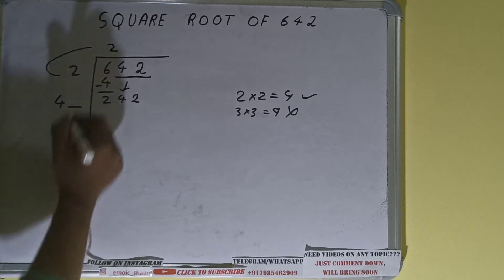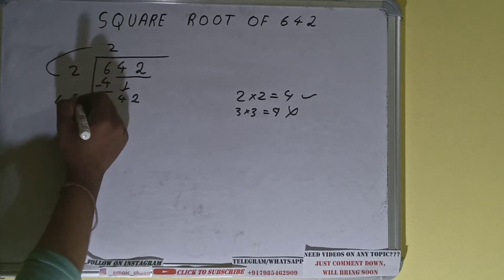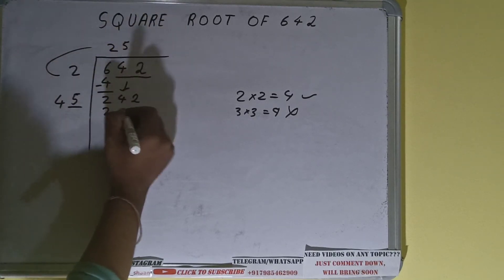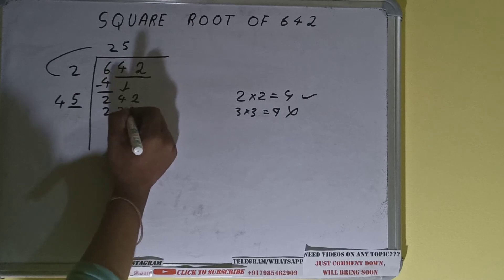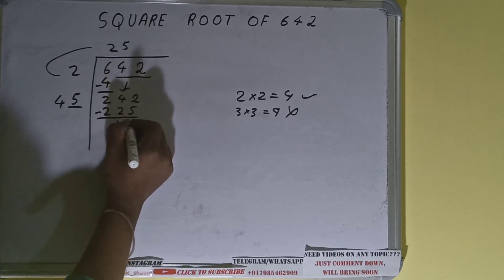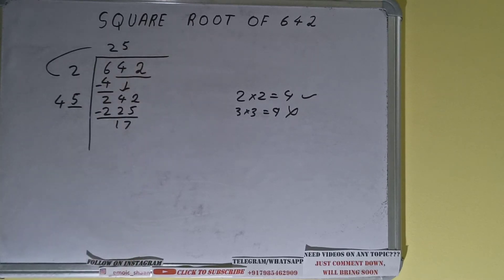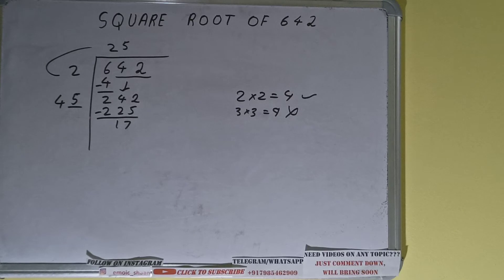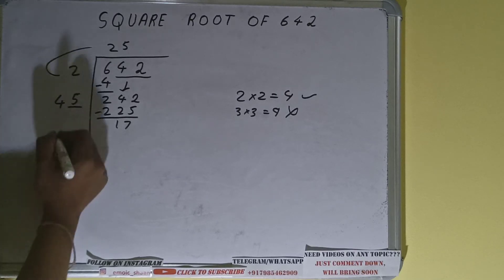Whatever number we write here, we have to write here also. If we write 5 here and 5 here, it will be 225. On subtracting, 17 will be left. We did 45 into 5, so add both: 45 plus 5 will be 50.